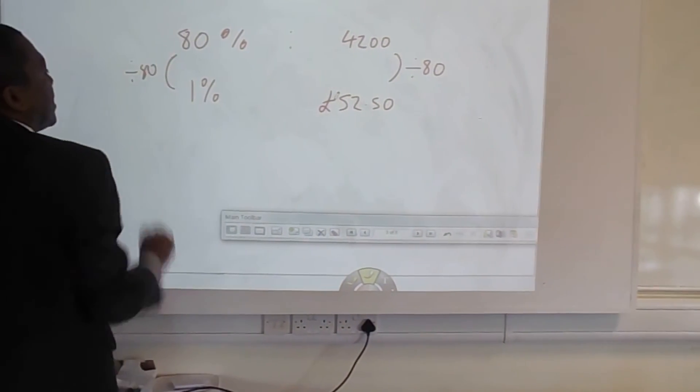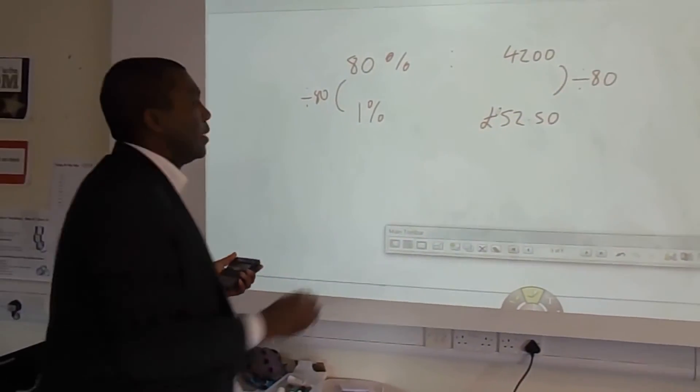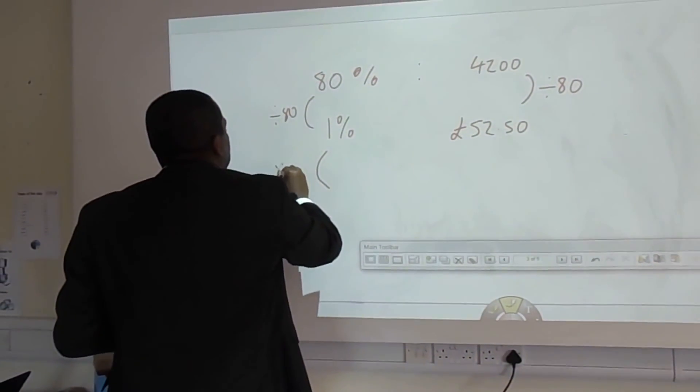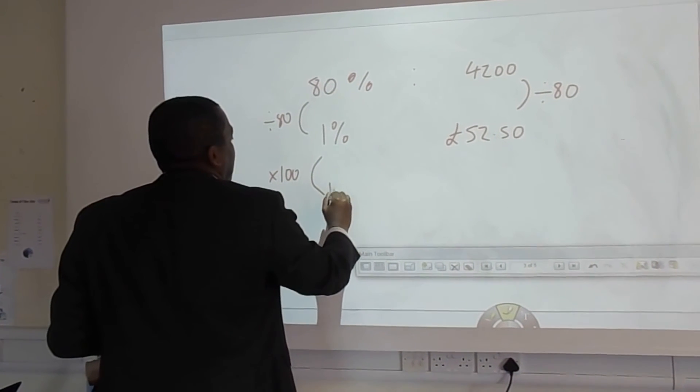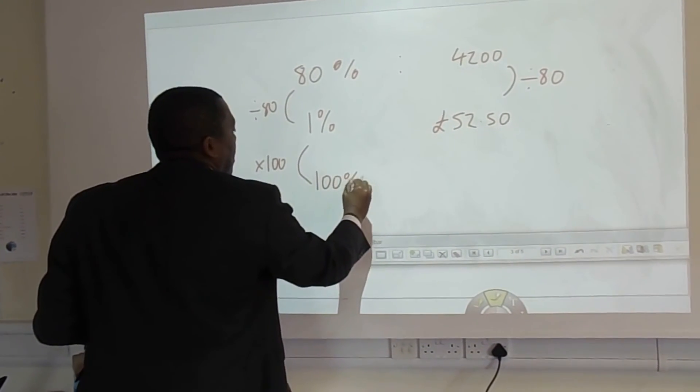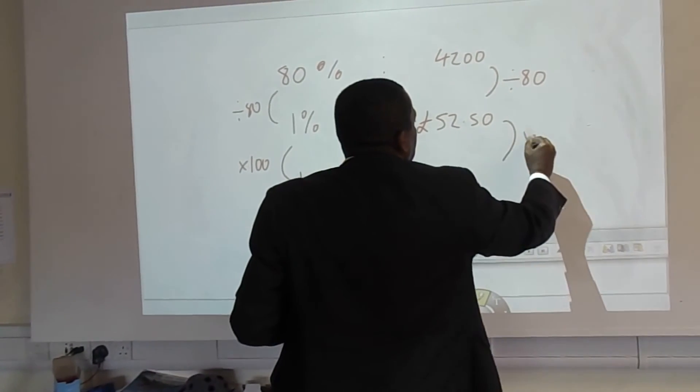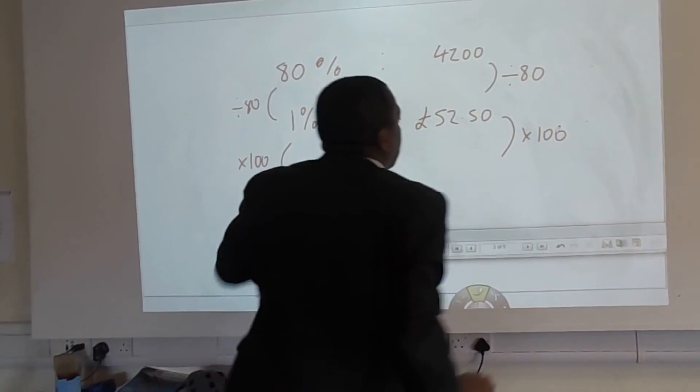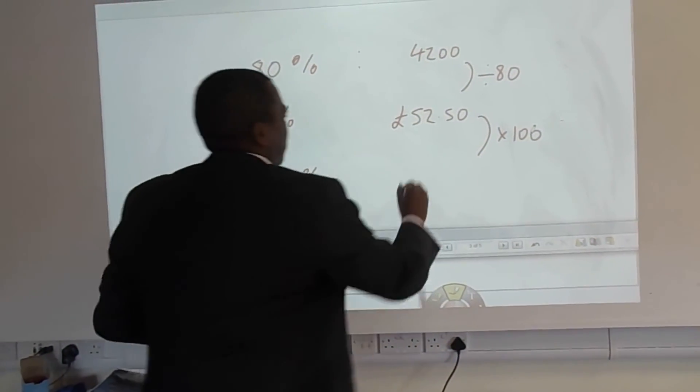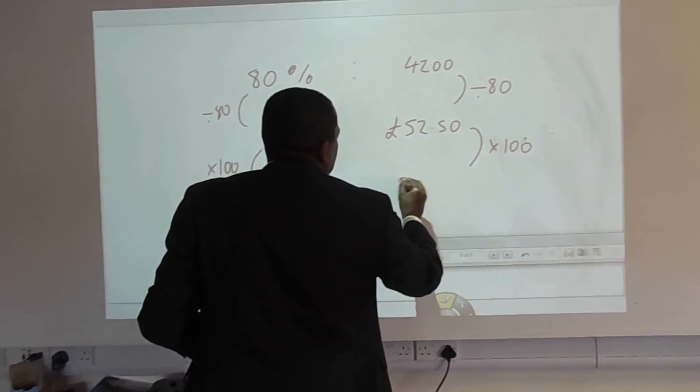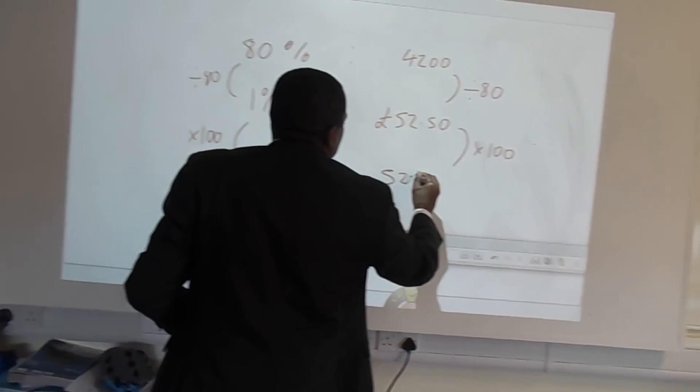Then I need to scale it back up to what 100% was. So I'm going to times it by 100% here. That gives me the 100%. Times it by 100% here. I don't need to calculate for this bit. Times it by 100. And that becomes 5,250.